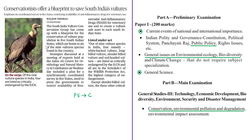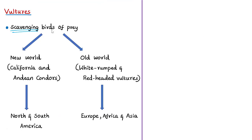Our first news article discussion is based on vulture conservation. Vulture conservation groups have come up with a strategy for the conservation of vulture population in the five South Indian states. These states are home to six of the nine vulture species found in our country. In this discussion we will see about the vulture species in India, their significance, and the reason for the decline in vulture population.